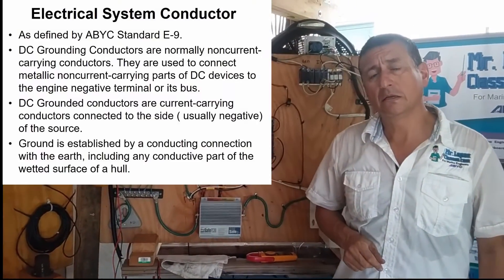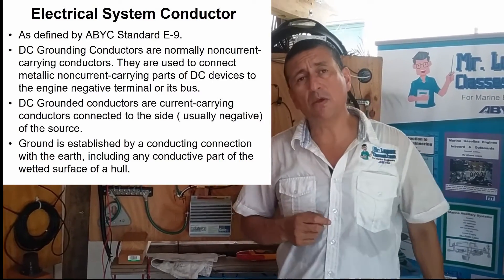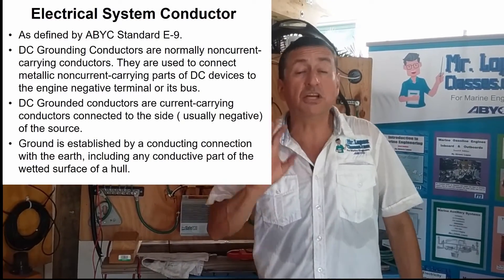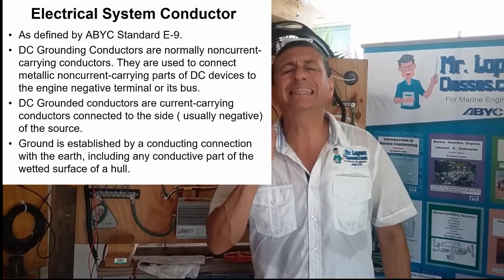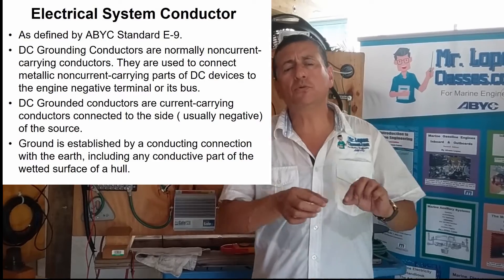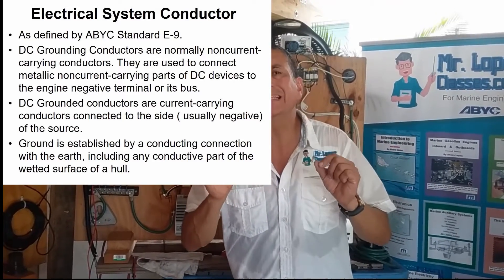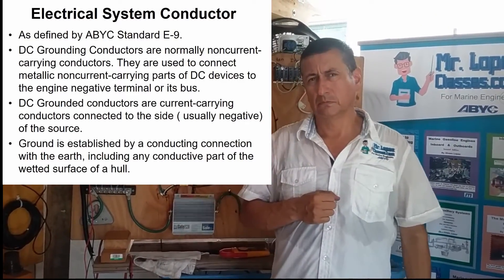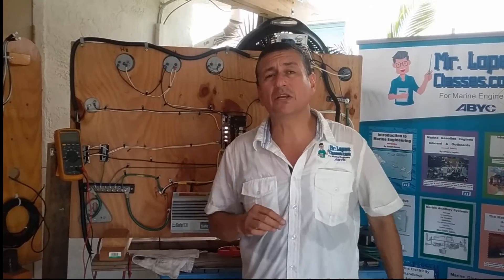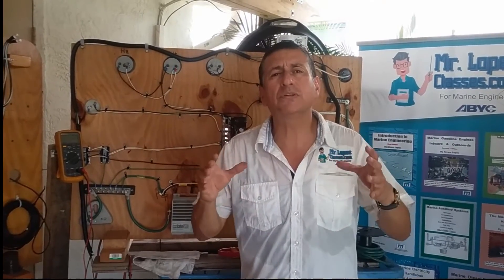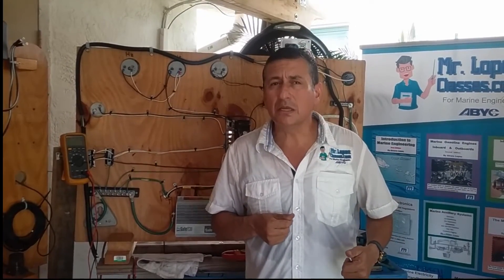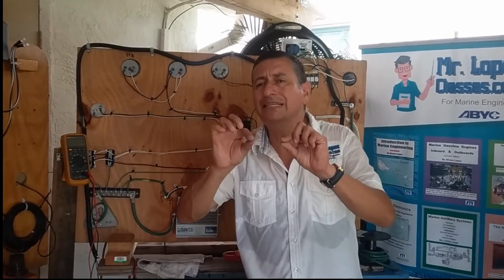The bonding bus bar — if you remember in ABYC — how much current is normally on the bonding bus bar? It's supposed to be zero, or very small DC currents. The bonding bus bar is used to drain small DC currents. Where do those small DC currents come from? They normally come from static electricity from appliances and equipment. Static electricity is DC.